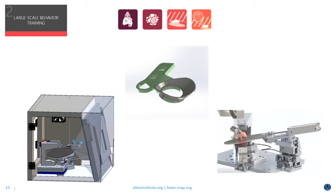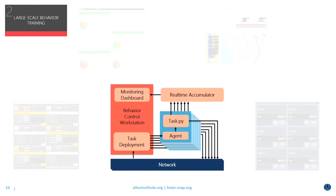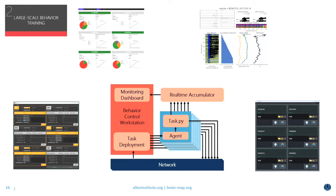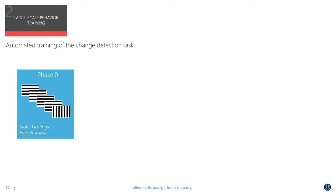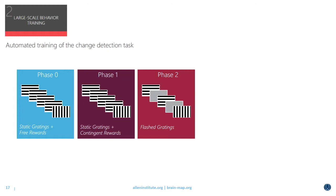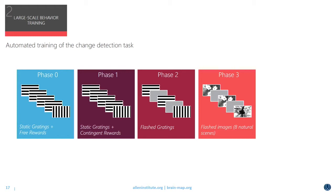A custom-designed software suite allows trainers to monitor and track daily mouse health, see performance metrics in real time, and calculates and deploys daily task parameters for automated transitions of the change detection task — all by simply scanning the barcode of the mouse's home cage. These automated transitions provide a standard progression through phases based on performance without user intervention. Phase zero habituates the animal to the static grating stimulus and reward system through paired auto-rewards. Phase one requires a lick after stimulus change to receive a reward. Phase two introduces flash gratings, and phase three introduces the final stimulus set of eight flash natural scenes.